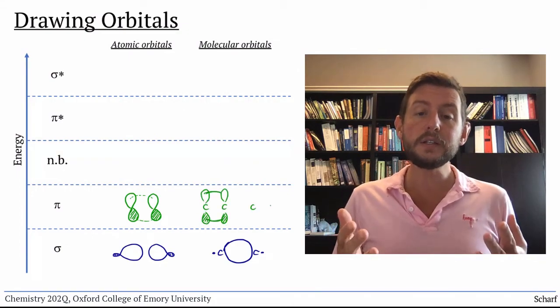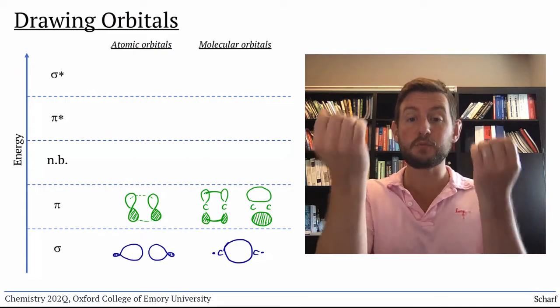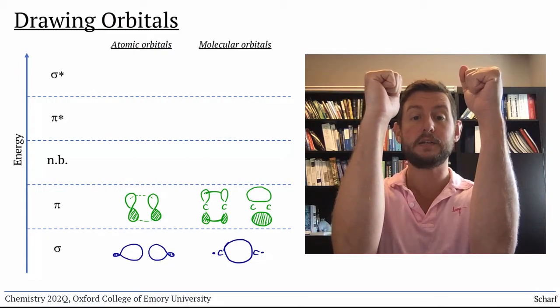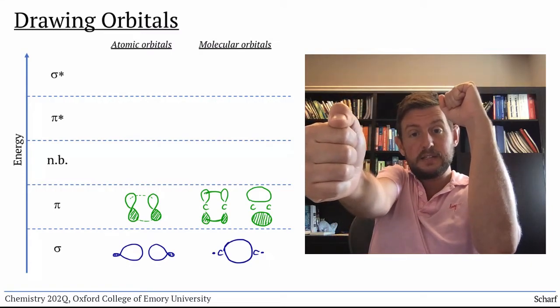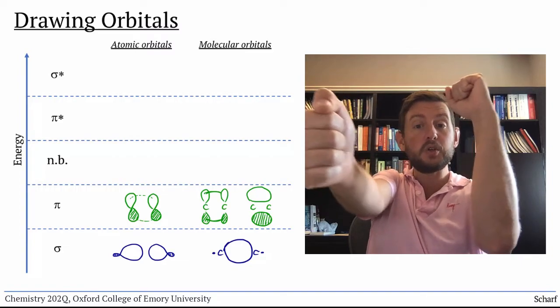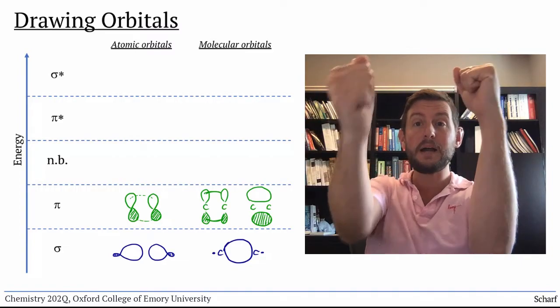When we look at these drawings, we can imagine why it's difficult to rotate around pi-bonds. If you were to rotate one of the atoms by 90 degrees, the p-orbitals wouldn't overlap anymore. The pi-bond would be broken.